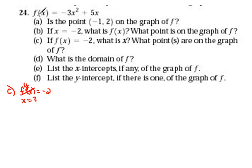So again, using our equation, we know that instead of f of x, or instead of y, we're going to be using negative 2 equals negative 3x squared plus 5x. And now we can solve this for x.